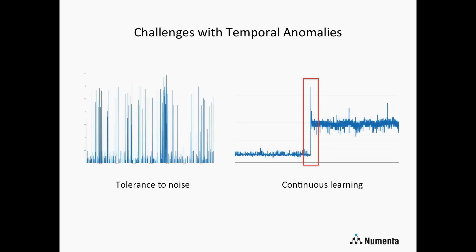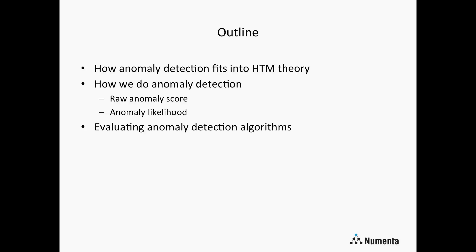In this example there's a very clear anomaly that occurs, and afterwards there are new patterns and a new range in the data. The system needs to update and understand that this is the new normal so that you don't need a person to go in and manually update the models. In the rest of this talk I'll go over how anomaly detection fits into HTM theory, how exactly we do anomaly detection — there are two main parts to that — and how we evaluate anomaly detection techniques.